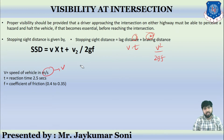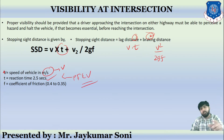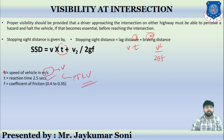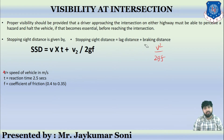If speed is in km/h it will be capital V, so consider the small v for m/s. The reaction time t is 2.5 seconds, derived from PIEV theory. You have already learned PIEV theory in transportation engineering as well. The coefficient of friction f ranges from 0.35 to 0.4. This is the stopping sight distance that needs to be provided for intersection design.